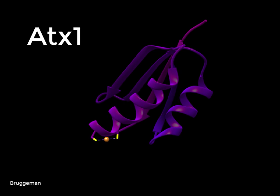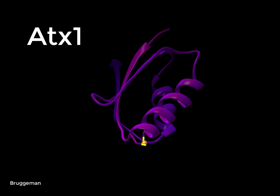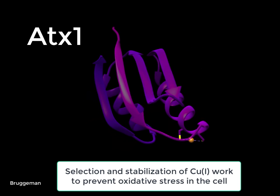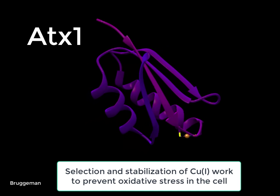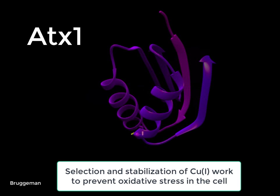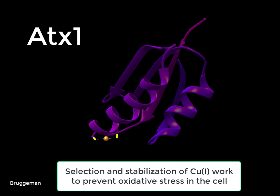If the copper chaperone is successful in its cellular role, the selection and stabilization of one oxidative state of copper, specifically the copper 1 oxidation state, will reduce instances of oxidative stress and maintain the health of the cell at very low energy costs.